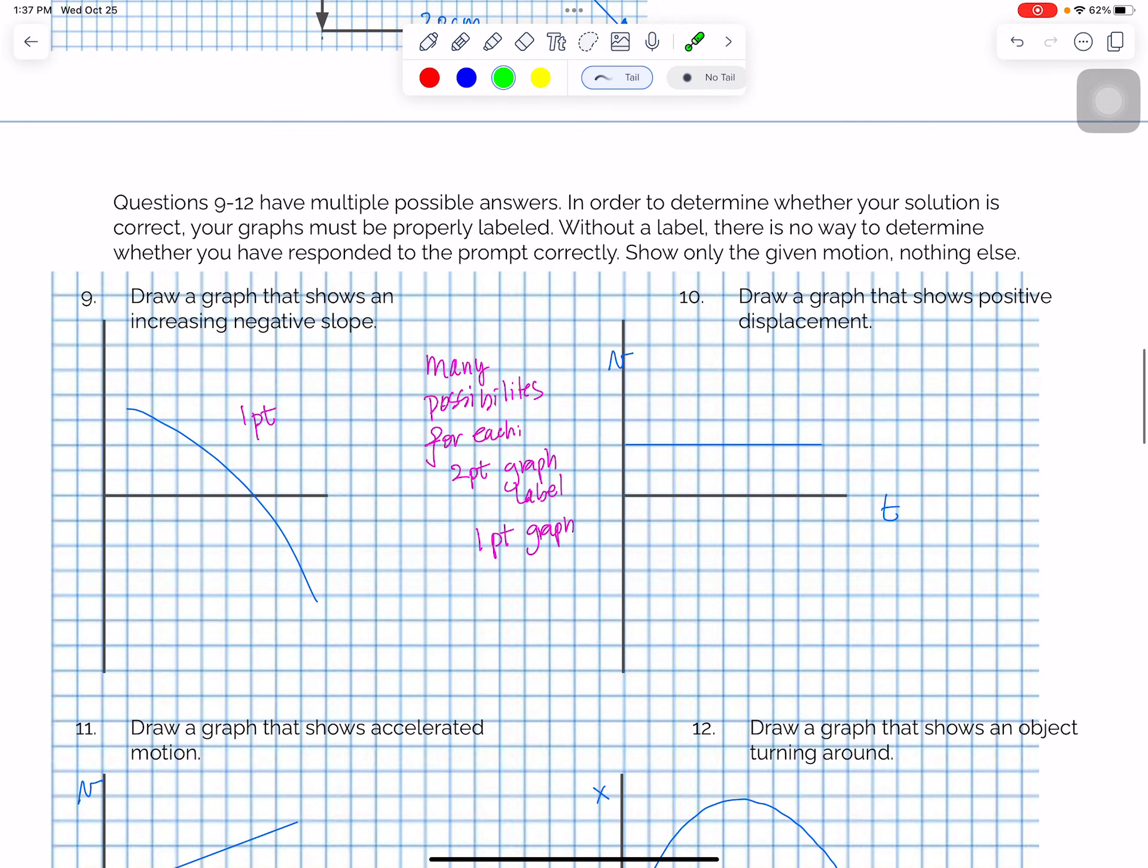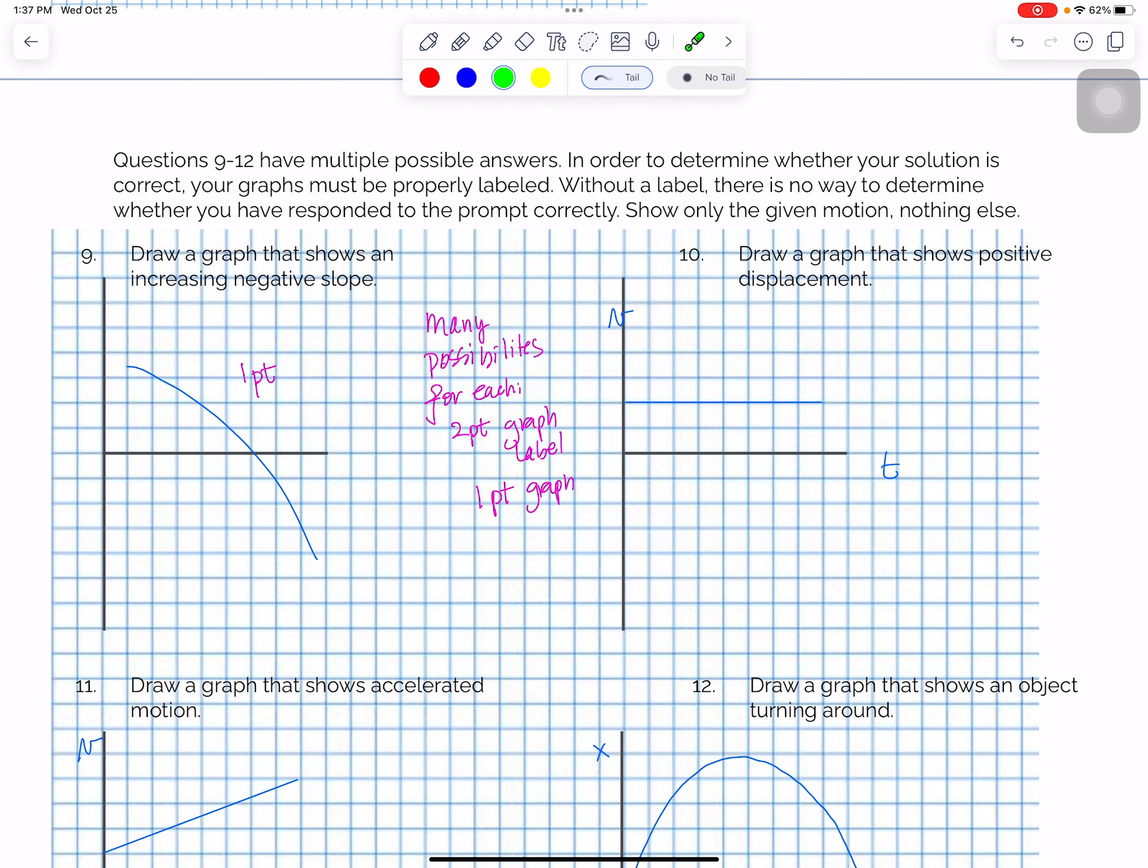Okay, the next part. These had multiple answers. And so I've only given you an example. Draw a graph that shows an increasing negative slope. This is an increasing negative slope. The only thing that you could change about this one is where you drew it, because there's only one thing that has an increasing negative slope. I gave one point for increasing negative slope. For the other three, 10, 11, and 12, each one was worth three points. Two points for the graph labels and one point for the actual graph.